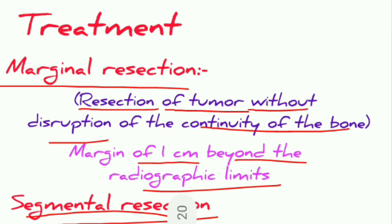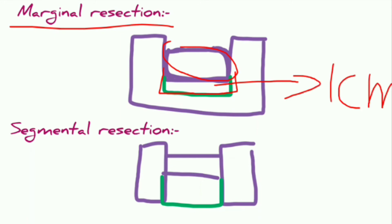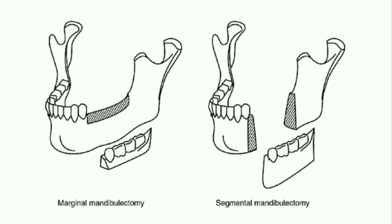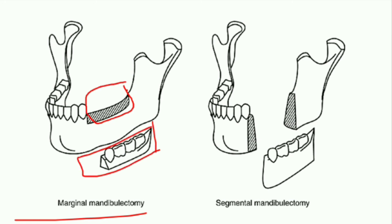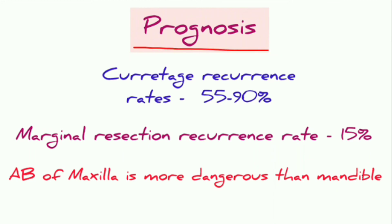In marginal resection, one centimeter of extra margin around the tumor mass is removed. In segmental resection, the tumor mass along with the whole area of bone is removed to prevent recurrence — forming segments as the name suggests. Segmental mandibulectomy removes the whole part of the mandible and is usually done in highly progressed ameloblastoma.